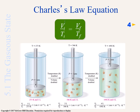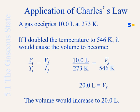We use this form of the equation to solve for any problems concerning Charles's law. So, here is a problem. A gas occupies 10.0 liters at 273 Kelvin. If I double the temperature to 546 Kelvin, it would cause the volume to become what?